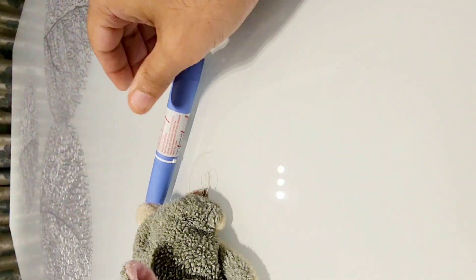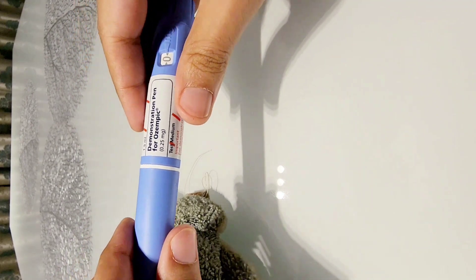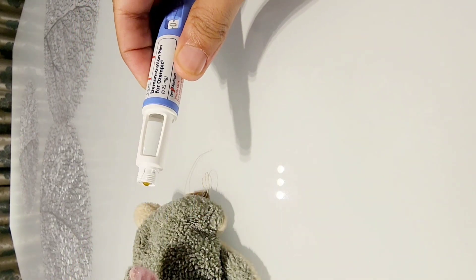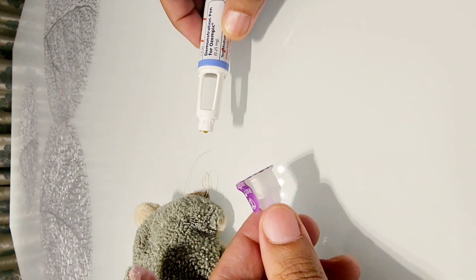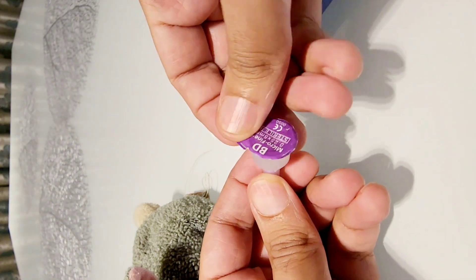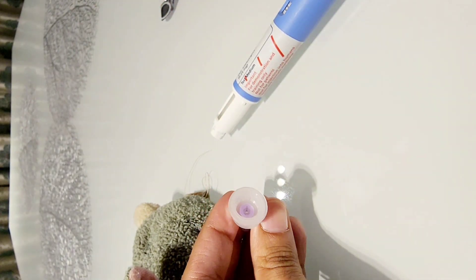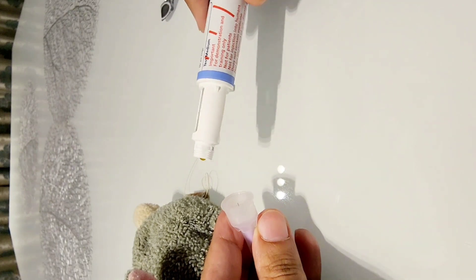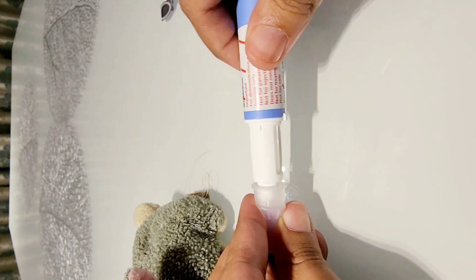Whereas for Ozempic it is slightly different. You would need to attach a needle on the top. The needle is similar to insulin needles as you would see. There is a cover on the top which has to be removed and after removing the cover you see the internal bit of the needle here which goes on this rubber ball on the top of the pen. And this comes like a screw.